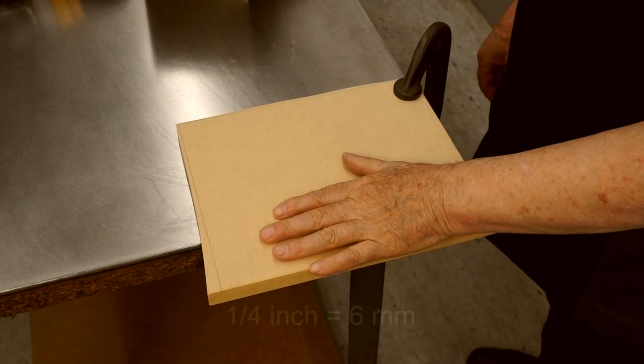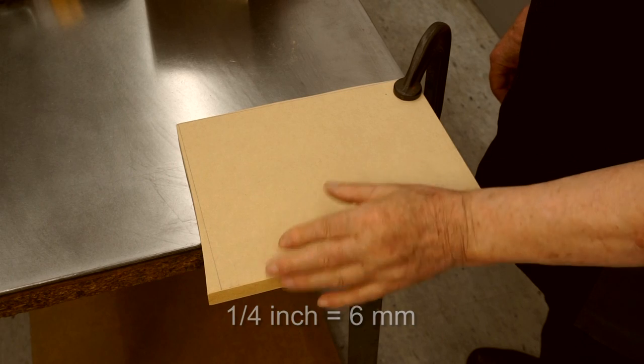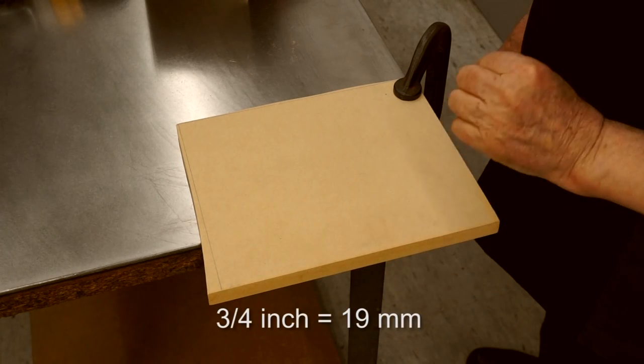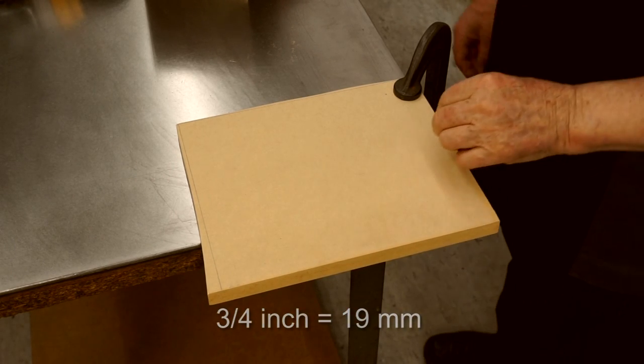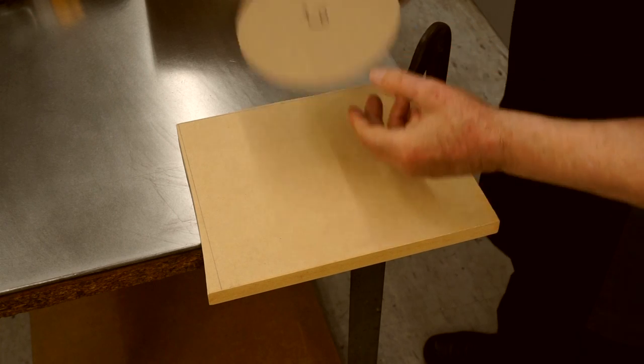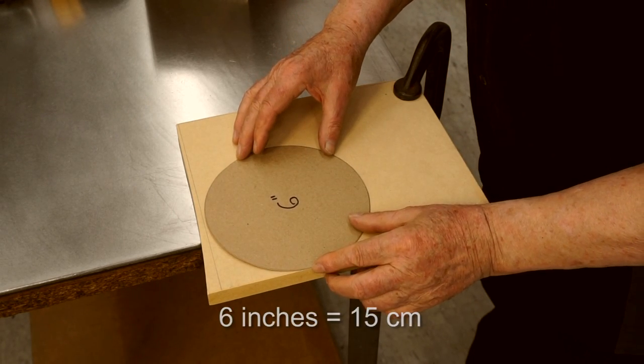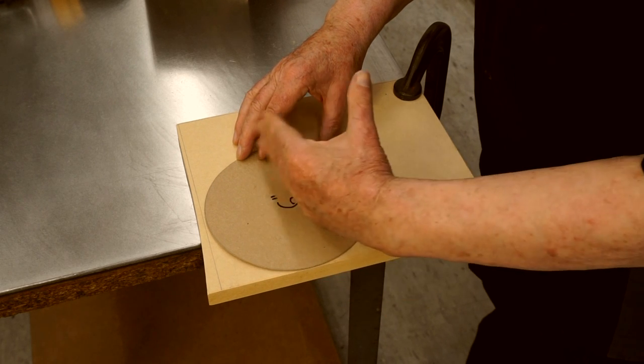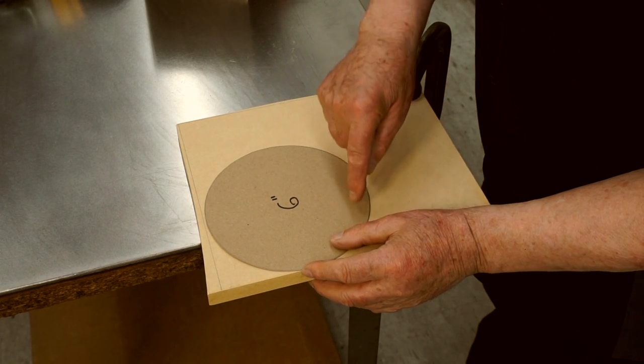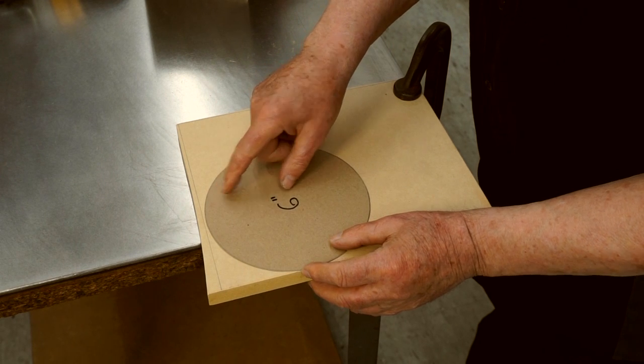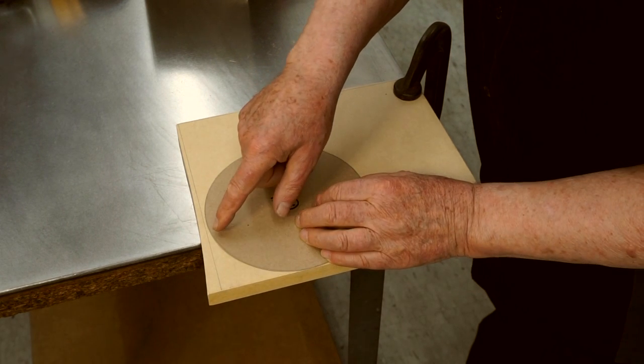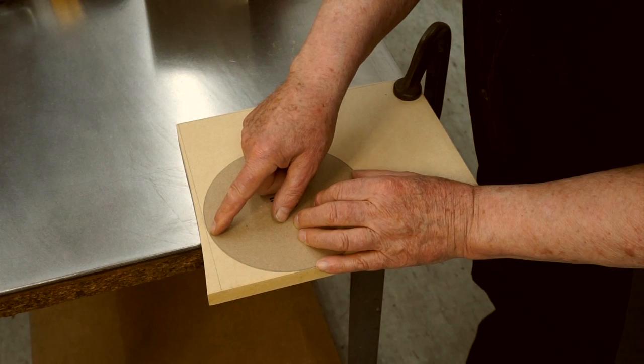I'm going to make a fixture for bending the quarter inch steel bar. So this is three quarter inch thick MDF medium density fiber board, and I've made a template here. It's a six inch diameter circle. I've learned that the quarter inch rod springs back about 15 or 20 percent. So if we bend it over a six inch circle, when it springs back it should match the seven inch circle on our pattern.